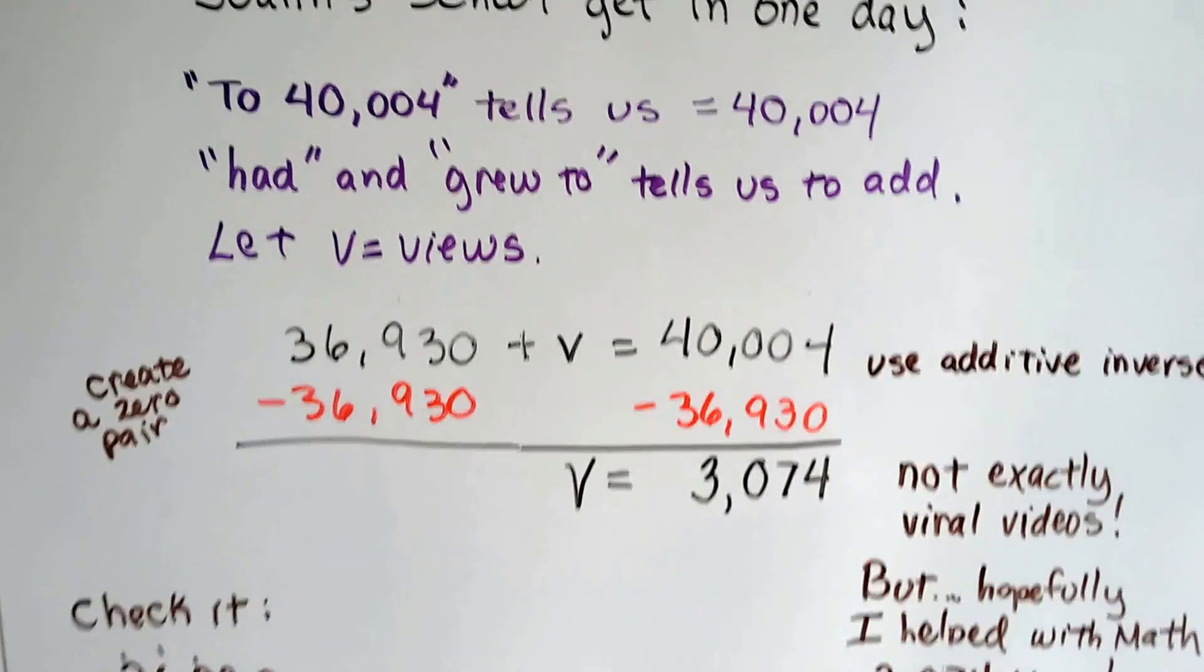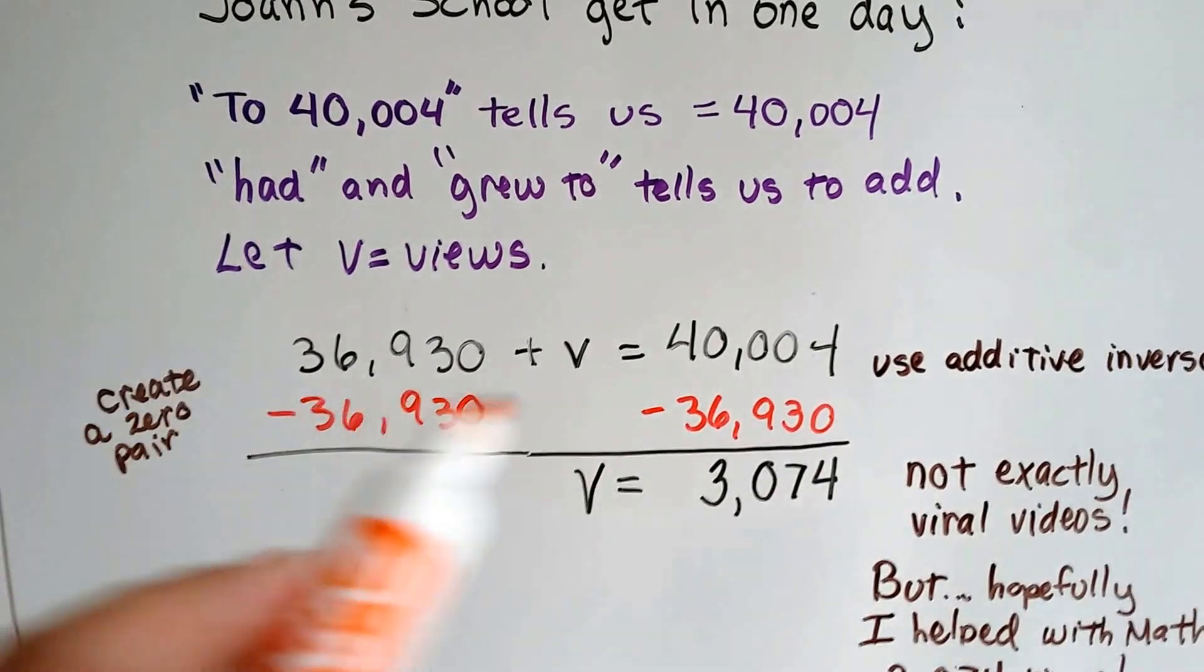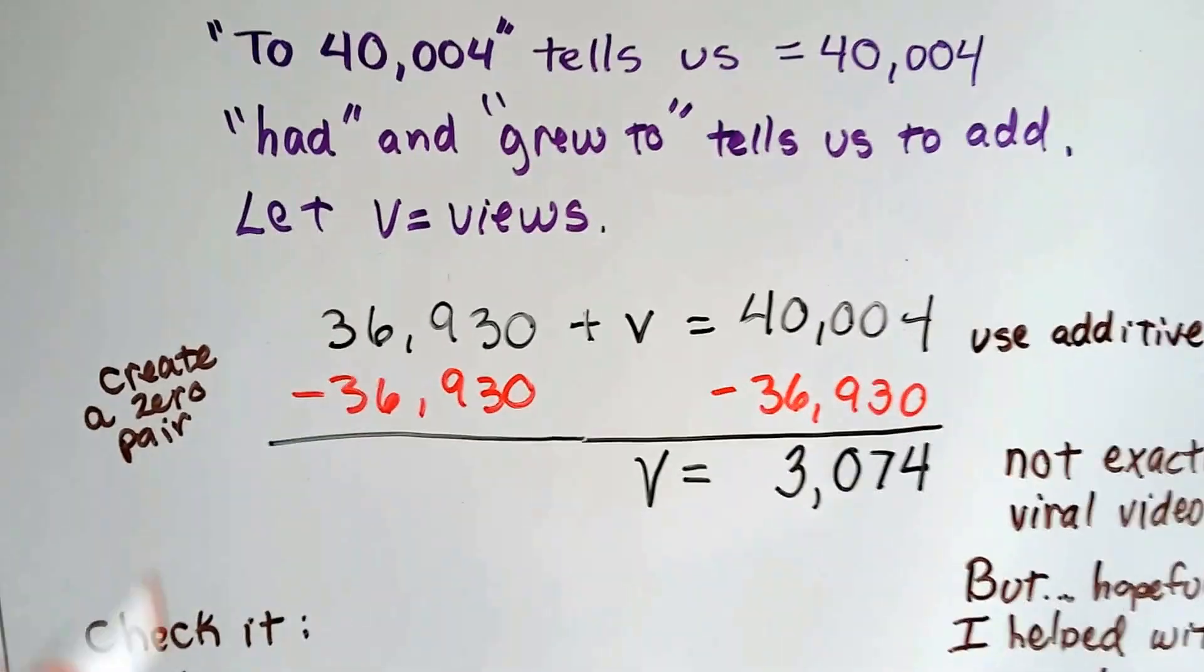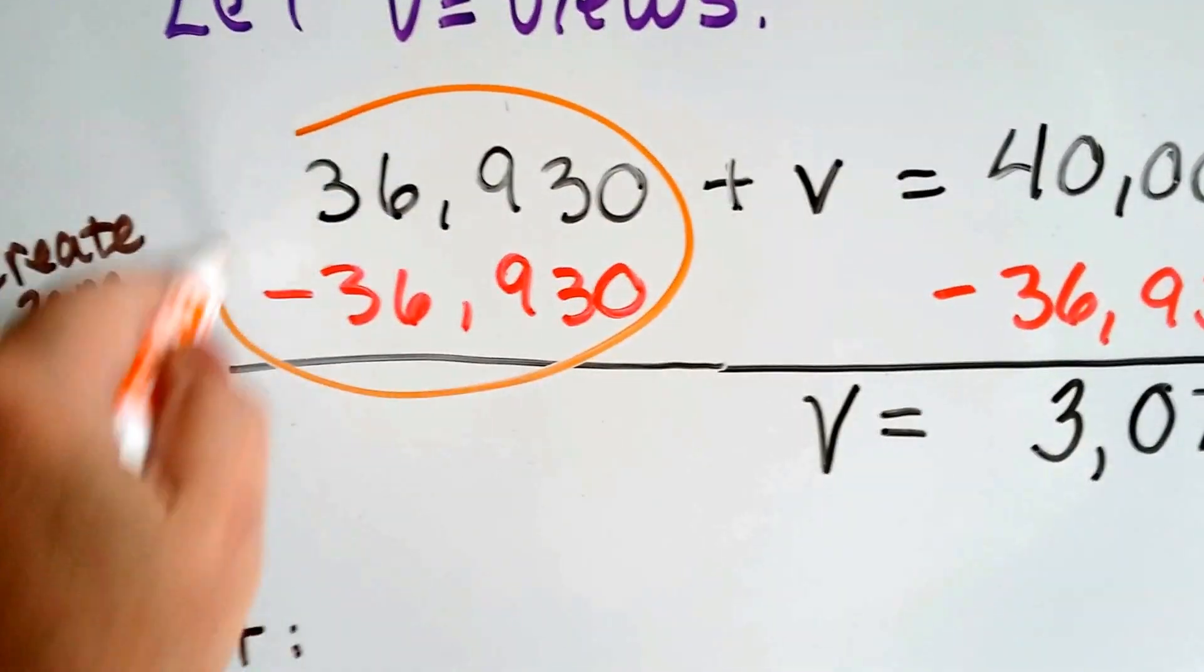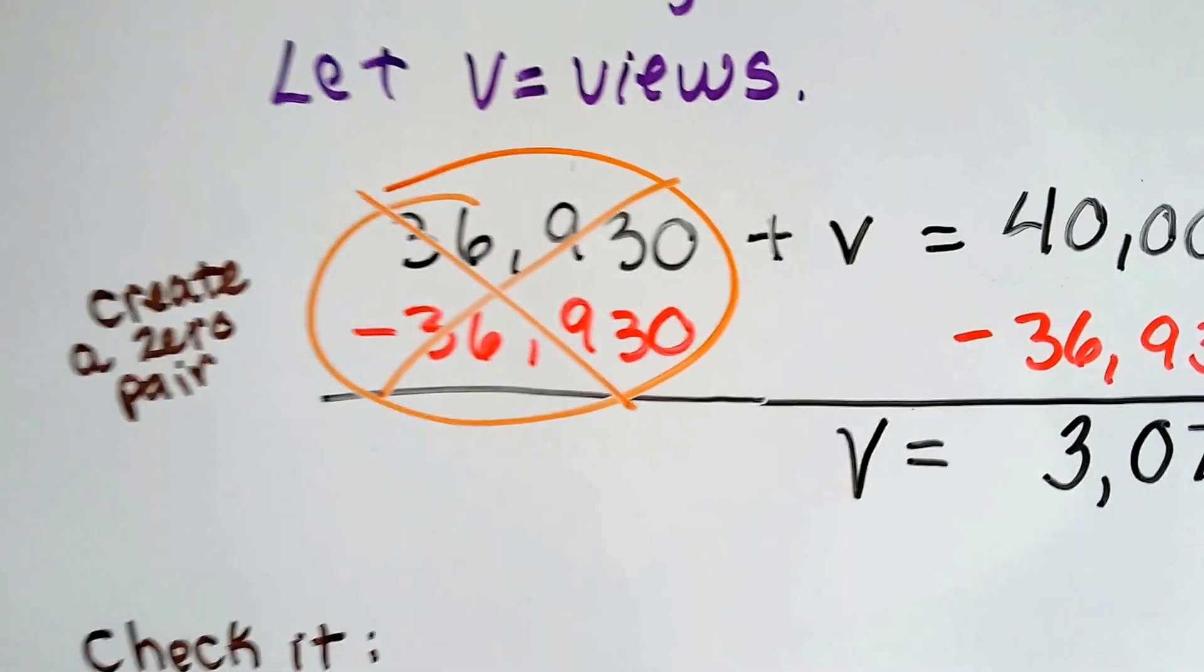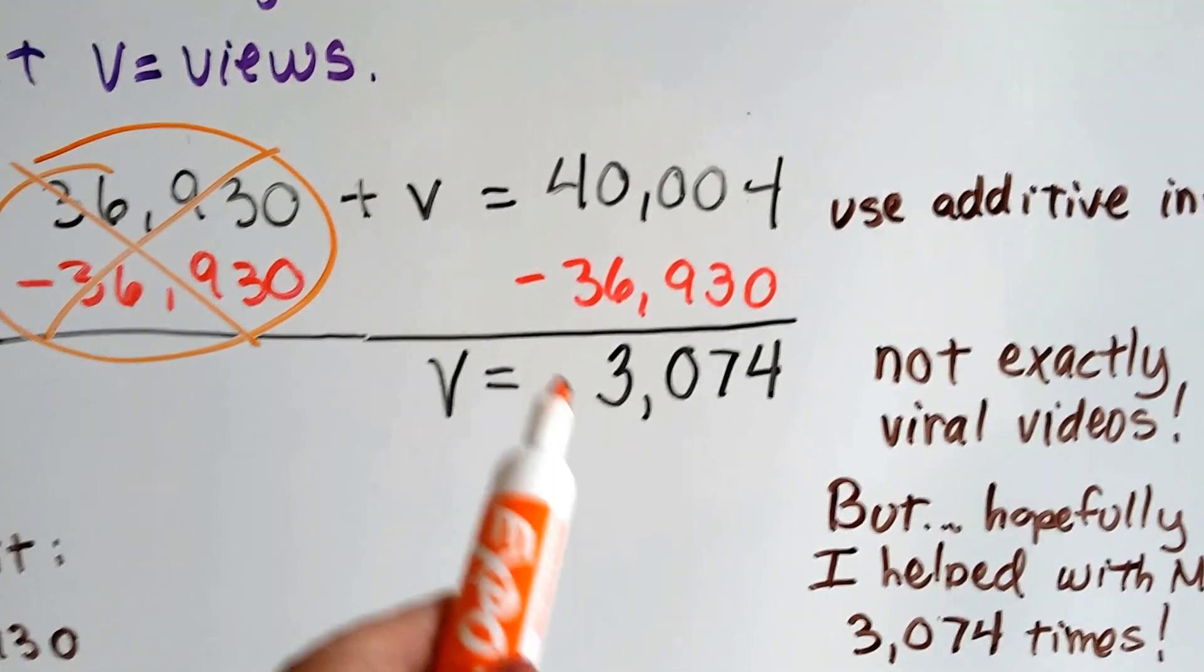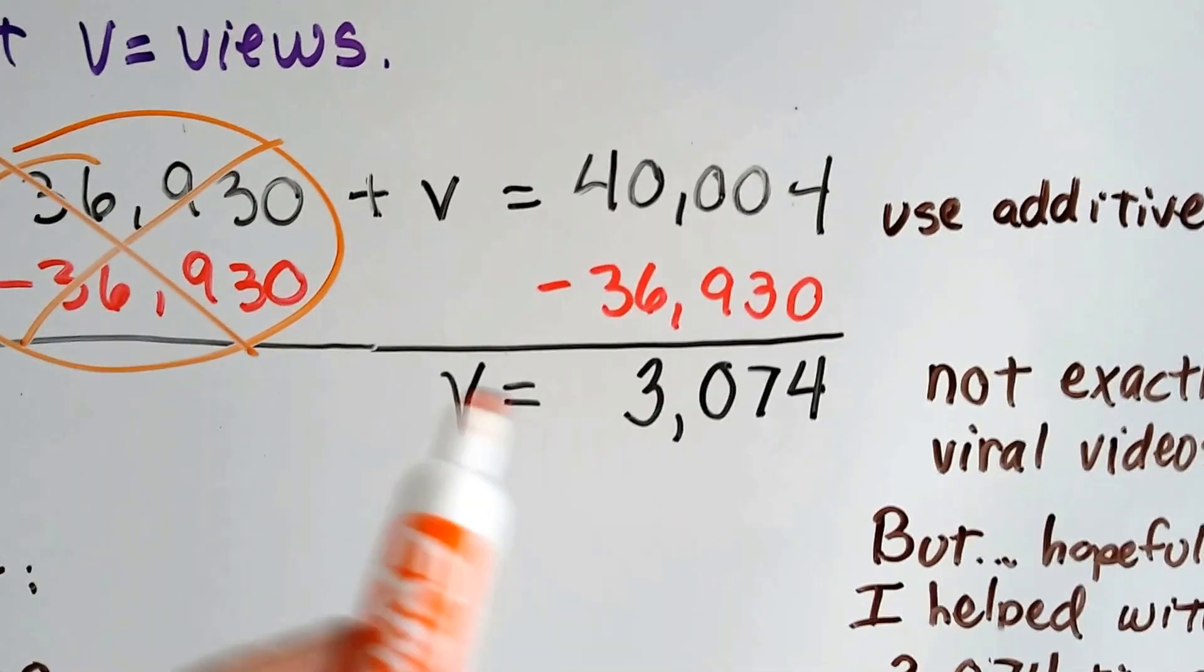We can use the additive inverse. Because this is a positive 36,930, we could subtract it from each side to get that v by itself on that side of the equal sign. This 36,930 minus 36,930 creates a zero pair. It's gone. And now all we have to do is the subtraction on this side, take away 36,930 from the 40,004, and we'll get our views.